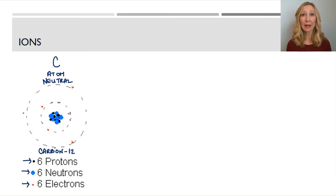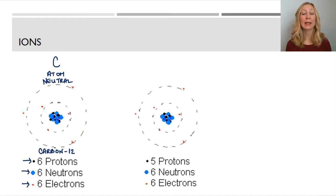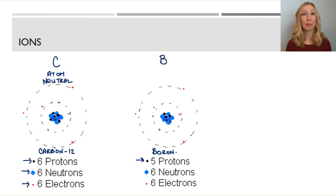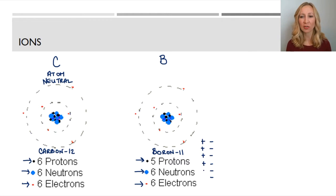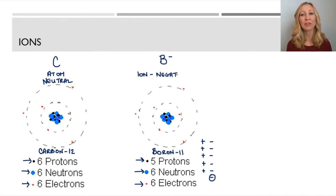The second particle has 5 protons, 6 neutrons, and 6 electrons. This is boron, because all boron atoms have 5 protons. This is boron-11 because it has 5 protons plus 6 neutrons — 11 particles in the nucleus. It has 6 electrons, so it has 1 extra electron compared to its protons: 6 negative charges and 5 positive charges. There is 1 extra negatively charged particle, so it's not called an atom anymore — it's called an ion, and it has a negative 1 charge.